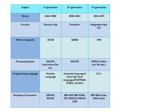The important change in the third generation was the development of ICs — Integrated Circuits. Many parts were miniaturized and placed on a chip. In this generation, there was a drastic increase in the efficiency of computers, and they consumed less power compared to the first and second generations.